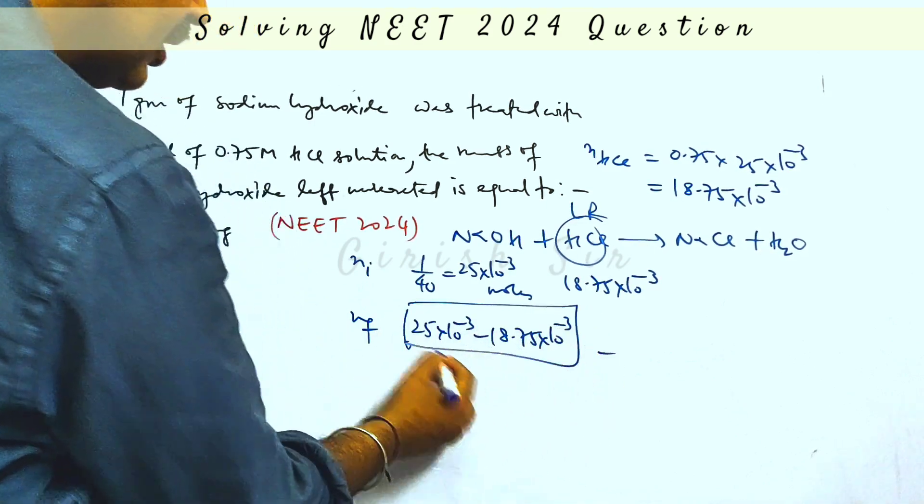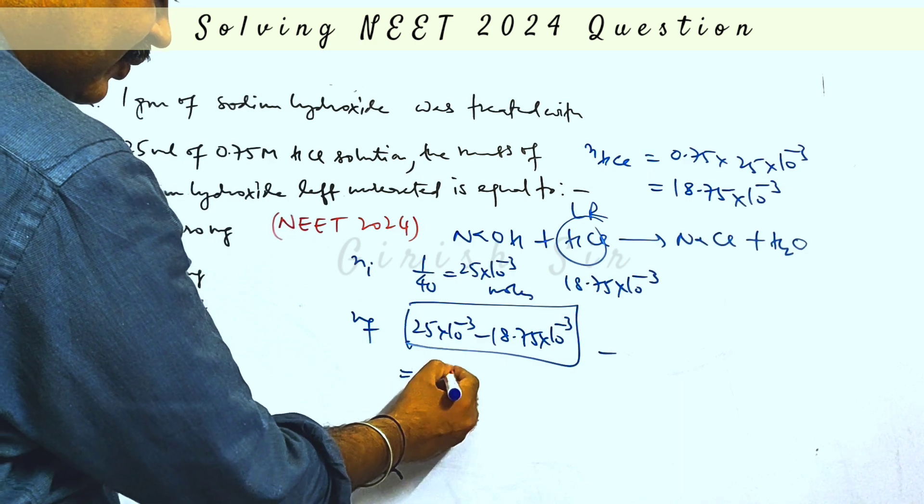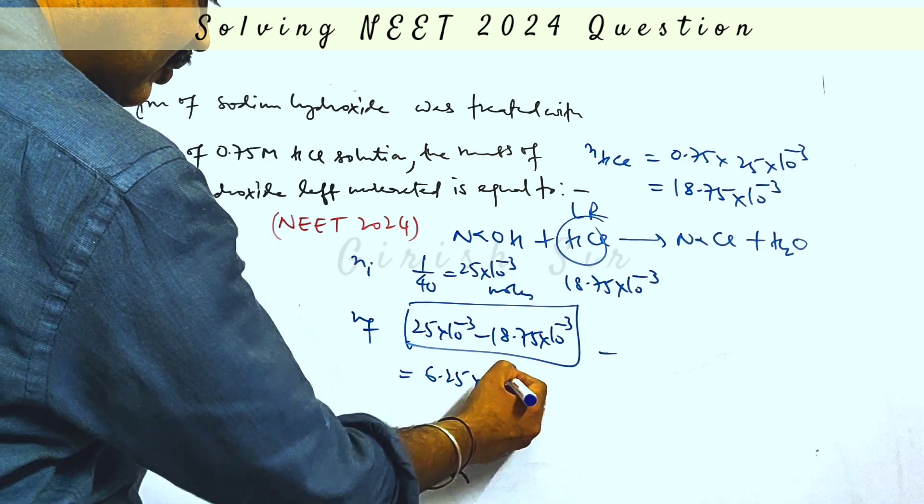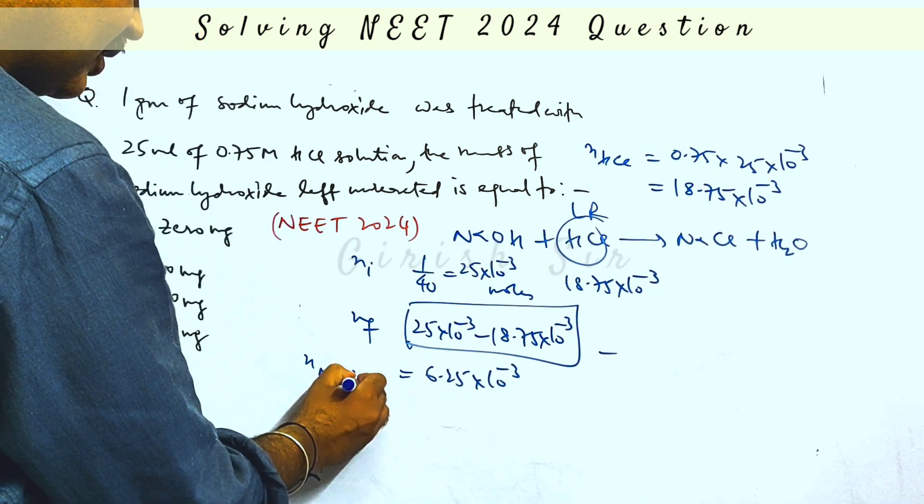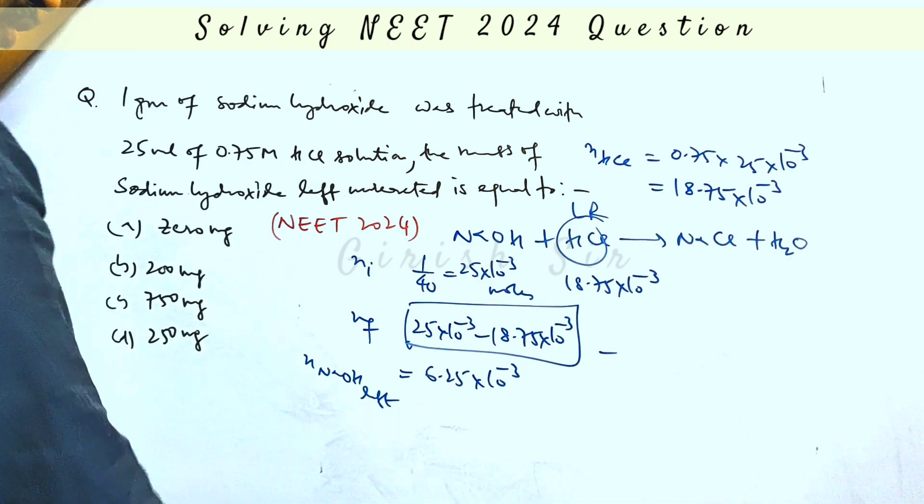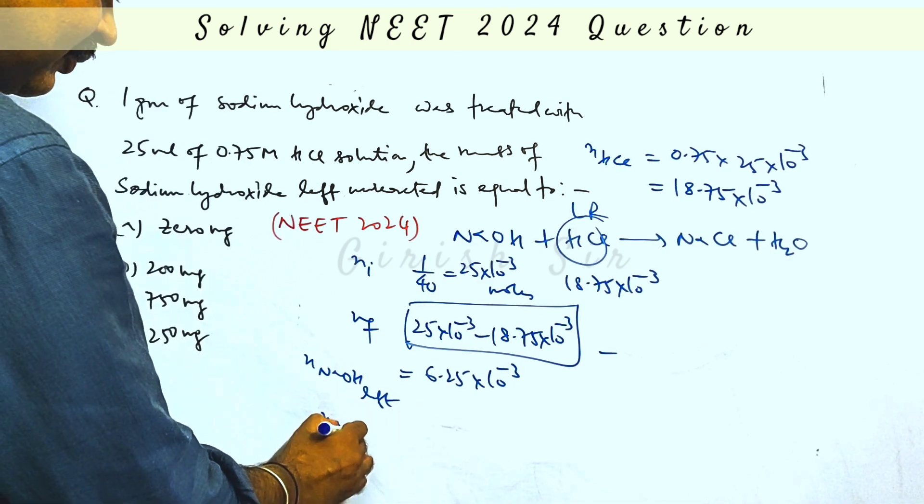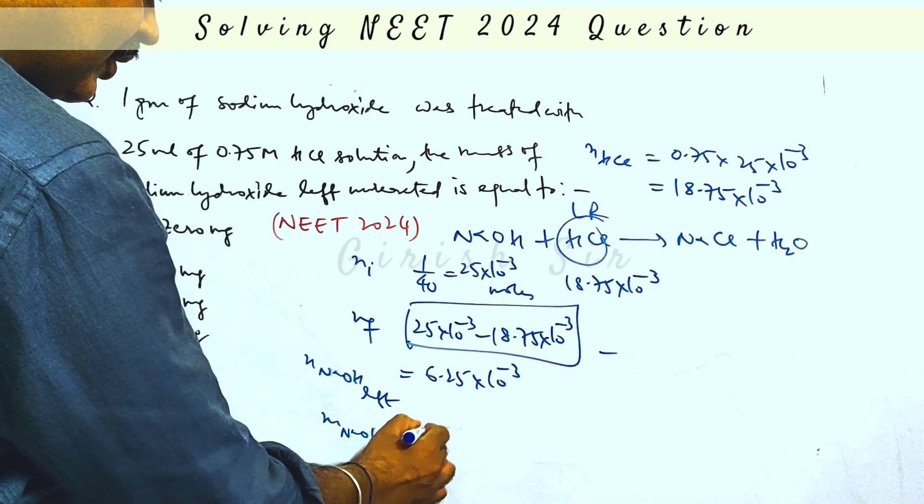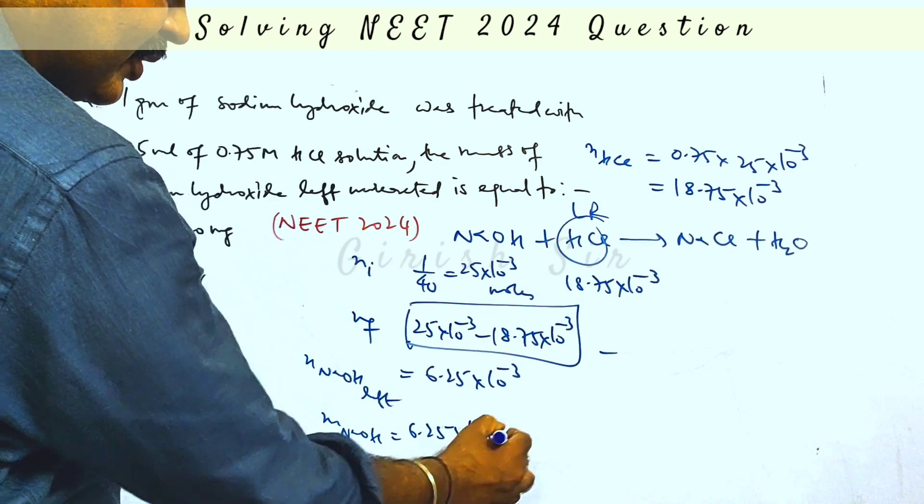This is the number of moles of NaOH left unreacted, which is equal to 6.25 × 10^-3 moles of NaOH left. From here we can find out mass. Mass of NaOH would be number of moles into molar mass.